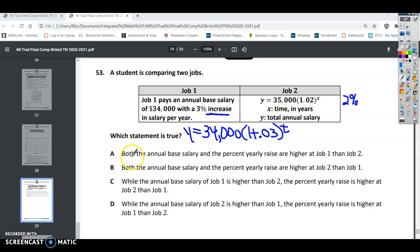So which statement is true? Both the annual base salary and the percent yearly raise are higher for job 1 than job 2. So job 1, 34 is less than 35, so it is not higher. So the base rate is not higher even though the percent increase is, it says both, so that's not true.